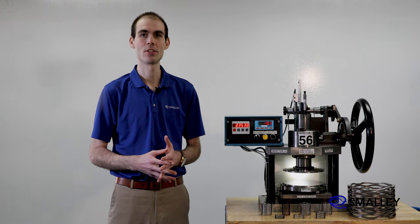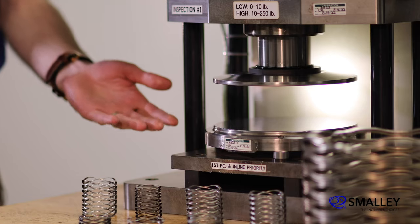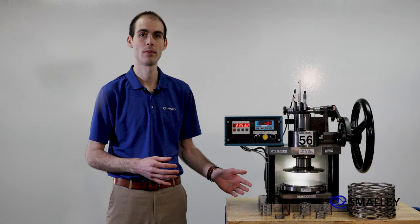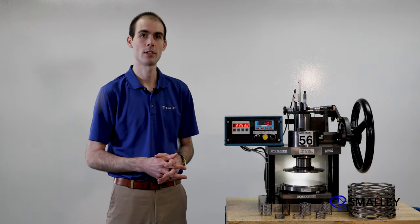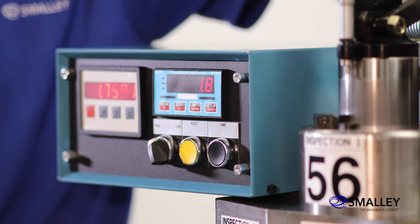This is an example of one of our load testers that we use to inspect our springs. The tester consists of two parallel plates attached to a load cell. These readouts show the distance between the plates, which will be the height of the spring, and the load measured by the load cell.